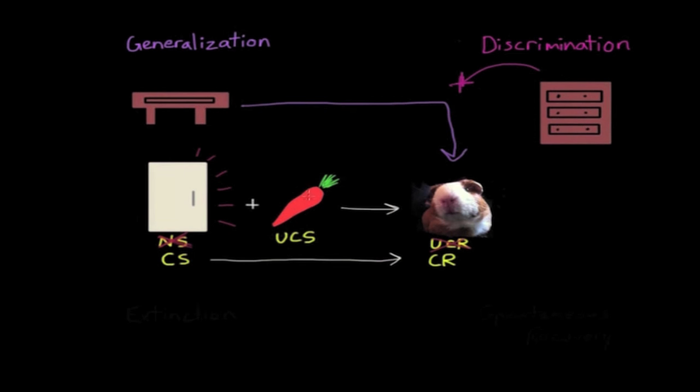However, if I decided to stop giving her carrots altogether, eventually she would learn that the sound of the refrigerator door alone isn't followed by a carrot, and the sound of the refrigerator door would gradually stop making her behave the same way she behaves when she receives a carrot. And we refer to this phenomenon as extinction. And it's when the conditioned stimulus is repeatedly presented without the unconditioned stimulus. And so eventually the conditioned stimulus is no longer able to elicit the conditioned response.